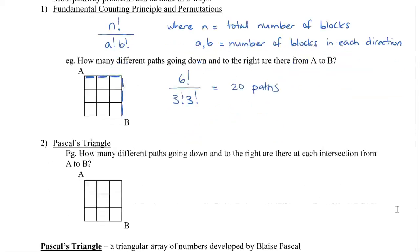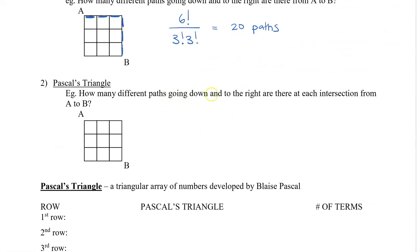Now before I introduce Pascal's triangle, let's see if we can actually just do this by counting — how many different paths going down and to the right are there at each intersection from A to B. Going along the top row and down the left column, there's only one pathway to each point, so we write a 1 at each of those intersections. At the interior point one step right and one step down, I can go right then down, or down then right, so there are two pathways.